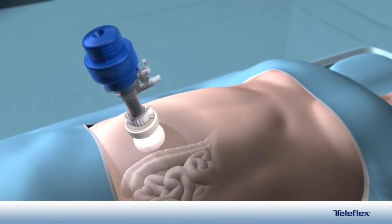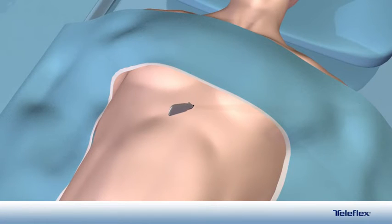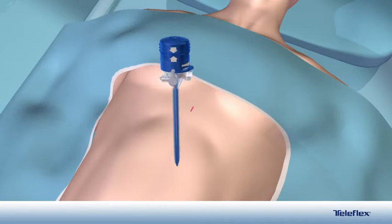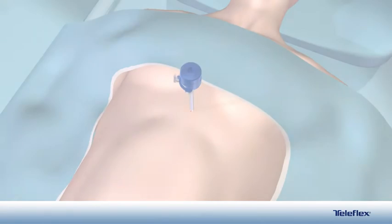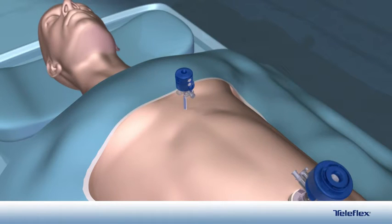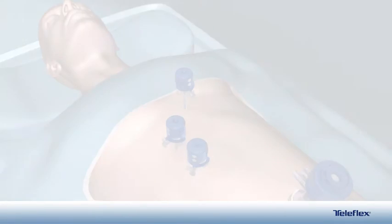The abdomen is insufflated. A small skin incision is made inferior to the xiphoid process. A 5 mm access port is inserted through the incision using an exaggerated 9 to 3 rotation while applying steady downward pressure. Next, two additional 5 mm ports are inserted, one in the right upper quadrant and another inferior to the previous port.